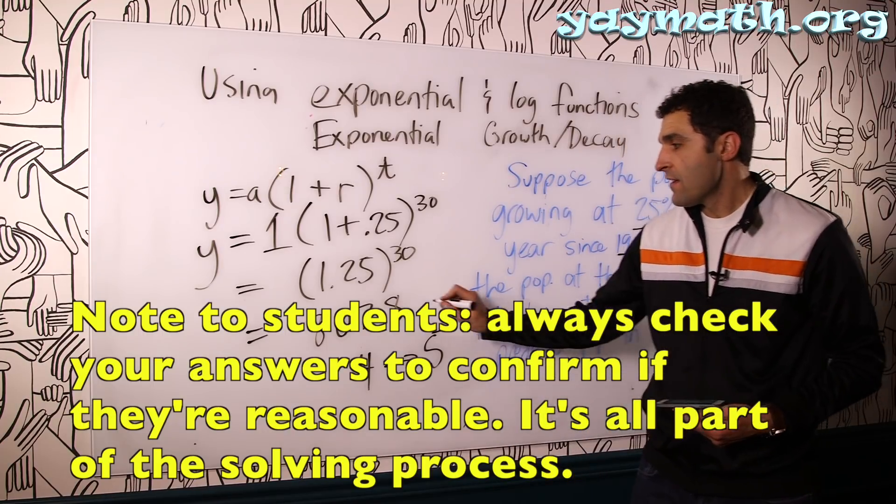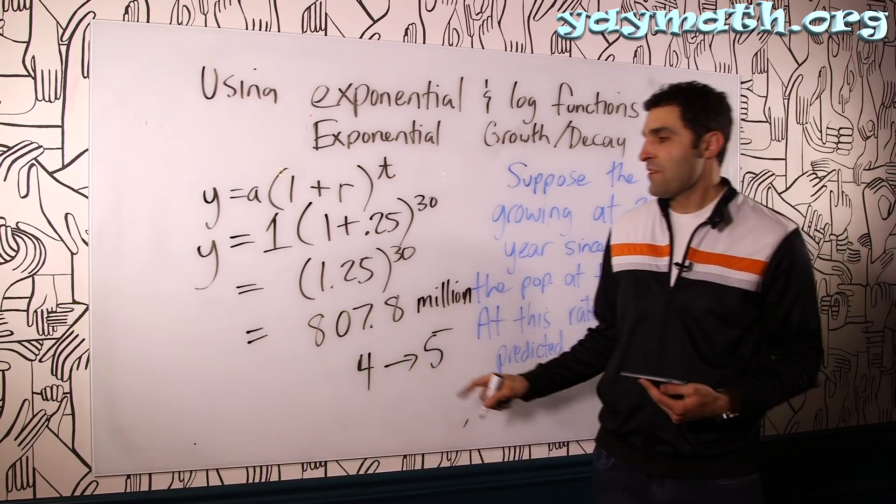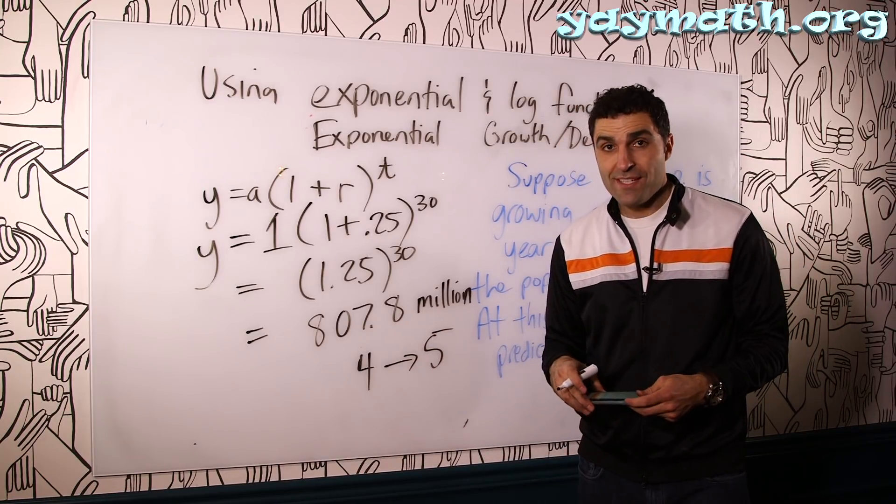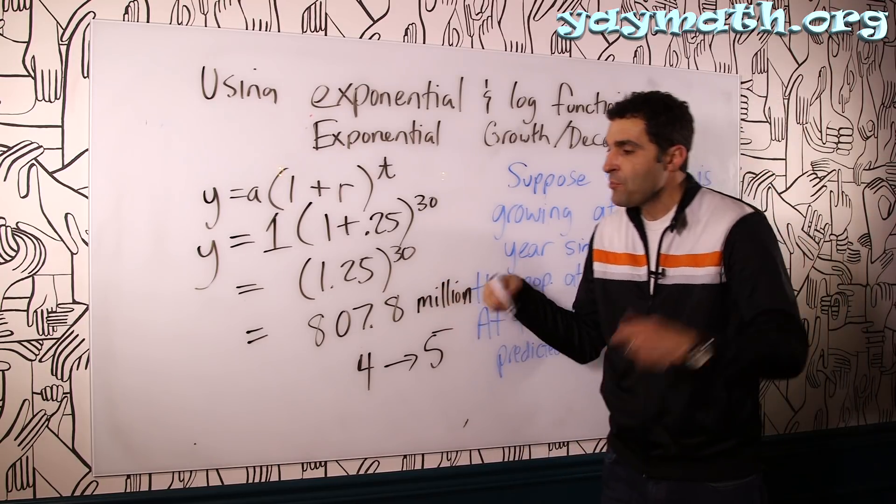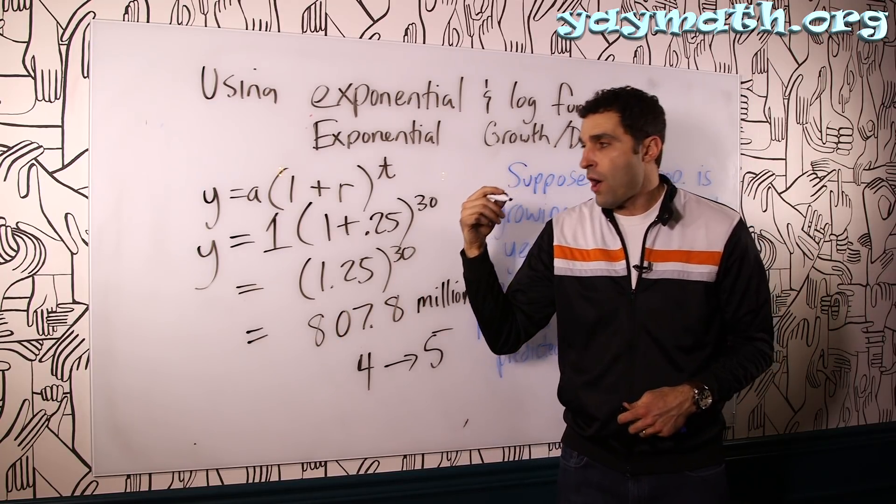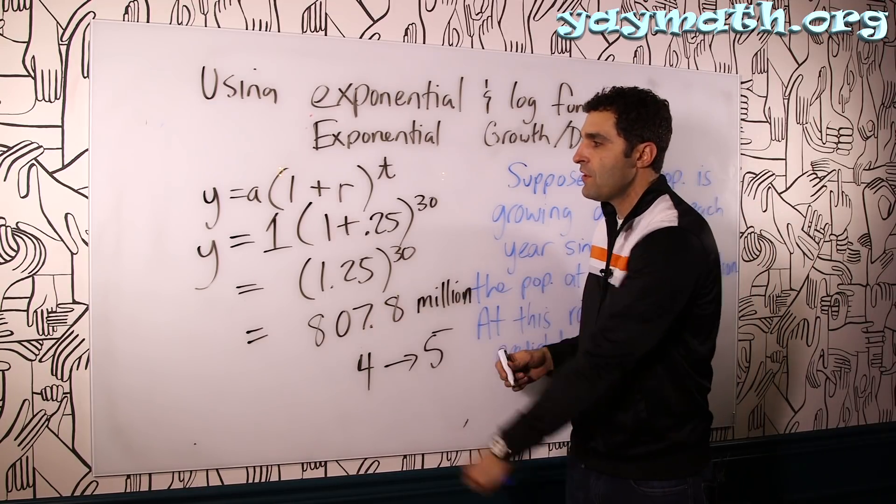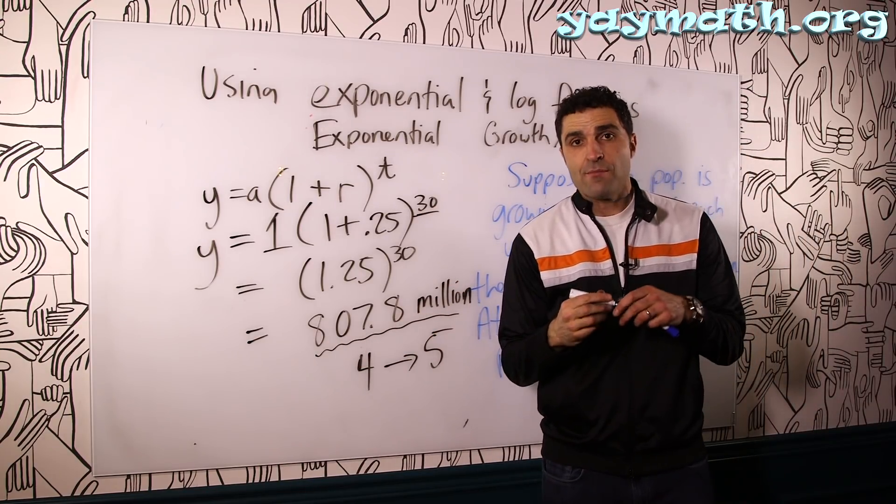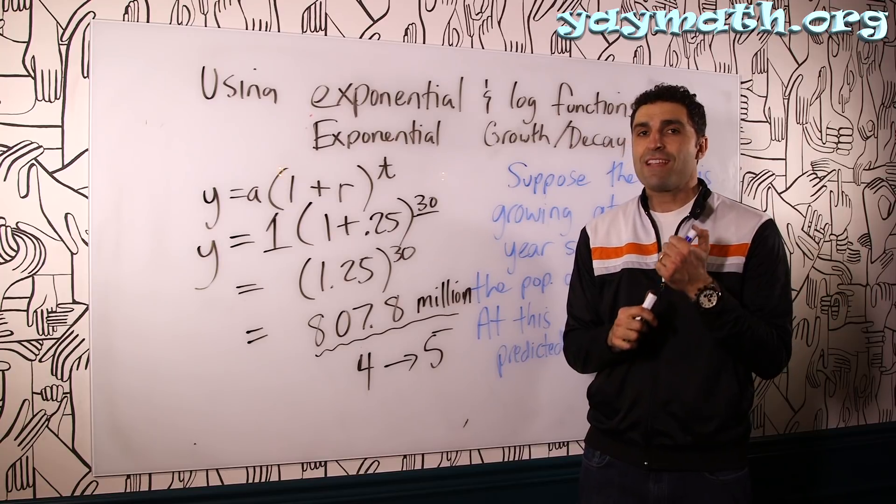So that would mean in 30 years, whatever city that is, or country for that matter, is expected to have a population of 807 million, or almost 808 million, which we could see is the massive power in these types of calculations. You can use the math to help you predict what the population will be. And so that you could think of things like infrastructure, building, water supply, roads, schools, hospitals, to service all those people and say, we need to have that done in 30 years to accommodate this number of people. It's really important in terms of planning for population growth in order to be able to come through for your society.